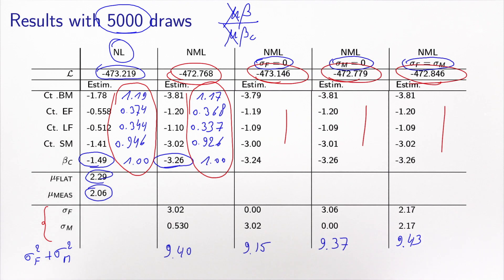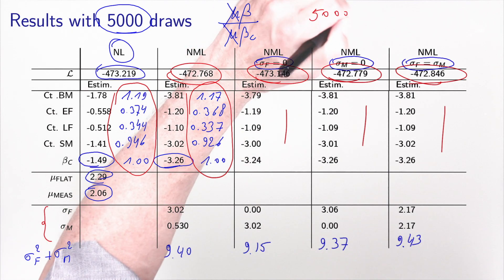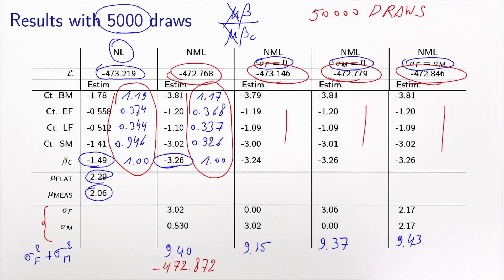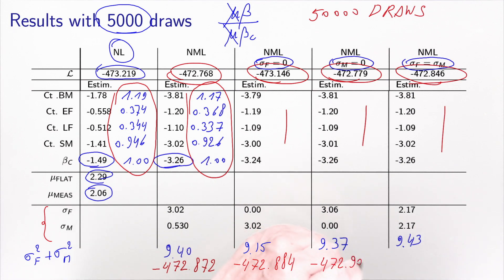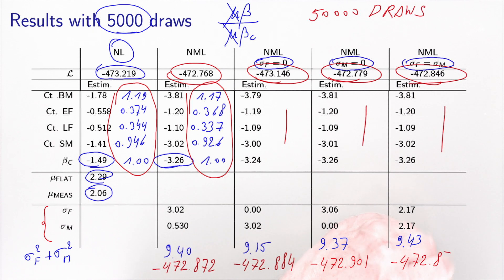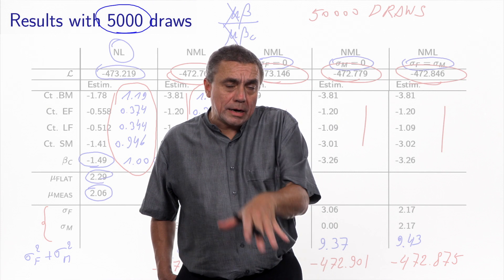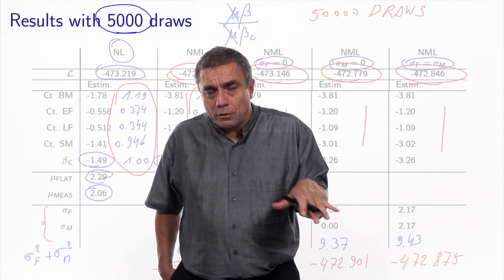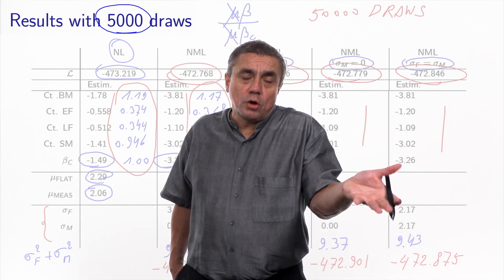I performed another estimation with 50,000 draws. The final log likelihood values obtained were: minus 472.872 for the un-normalized model, minus 472.884 when sigma_F equals zero, minus 472.901 when sigma_M equals zero, and minus 472.875 when the two parameters are imposed equal. The values are still not exactly the same — it is still an approximation — but they are much closer, confirming that increasing the number of draws improves accuracy as expected.